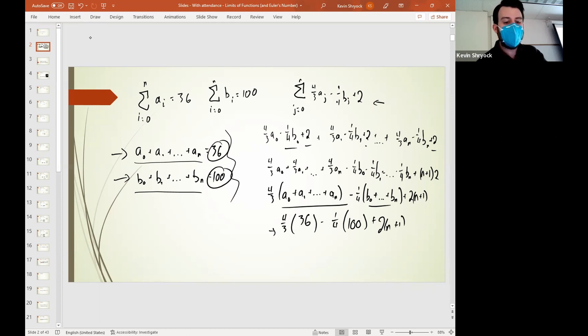So if you divide this by 3, that gives you 12 times 4 is 48 minus 25 plus 2n plus 2. I think brings you out to 25 plus 2n.